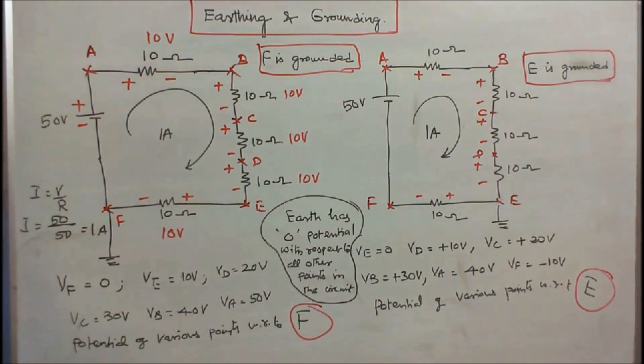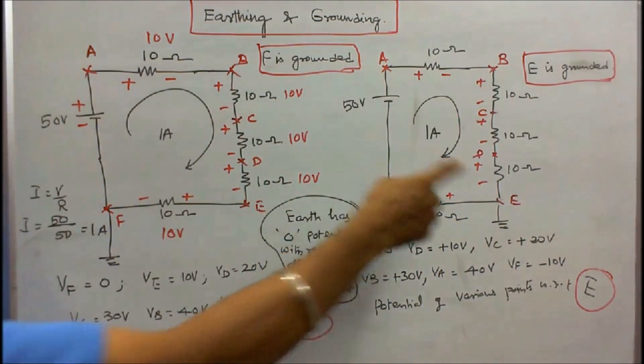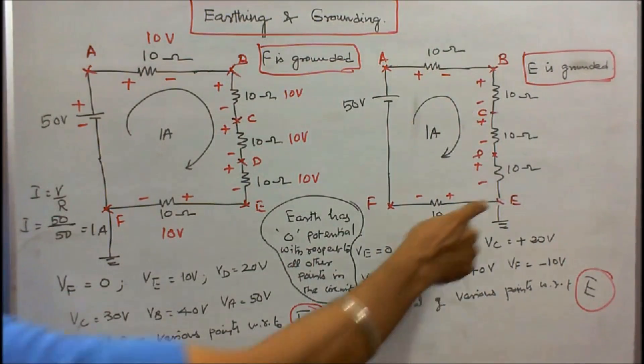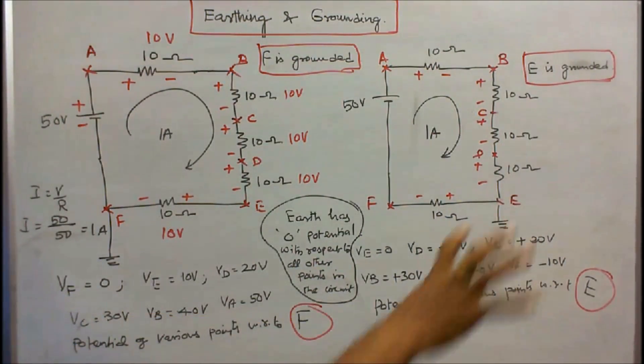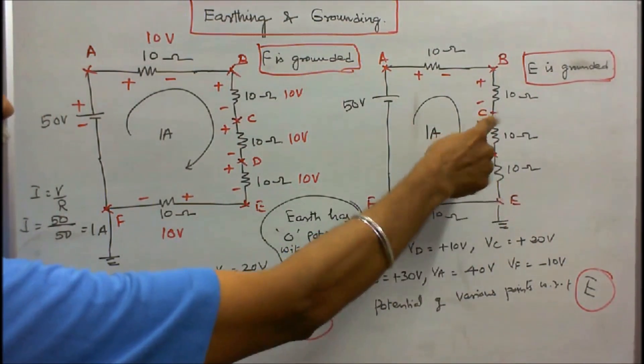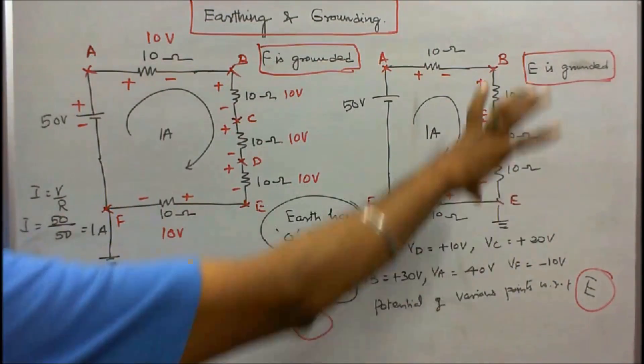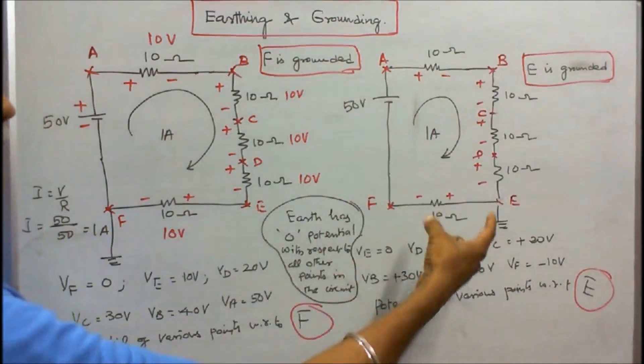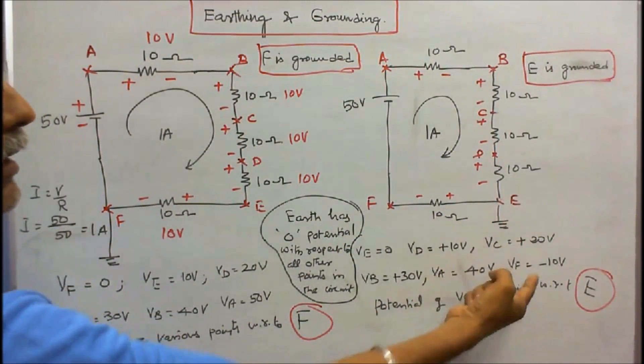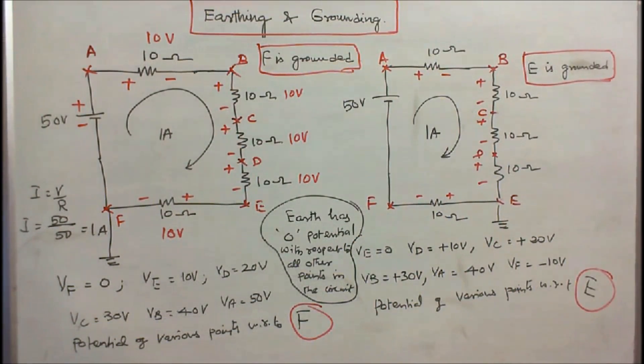Now same circuit. The E is grounded. Again the question is: Find the potential of various points with respect to E. Here VA is equal to 0. VD is equal to 10, VC is equal to 20. This voltage is 20, this voltage is 30, this voltage is 40. Here this voltage is VF is equal to minus 10. With this I conclude my lecture. Thanks for listening.